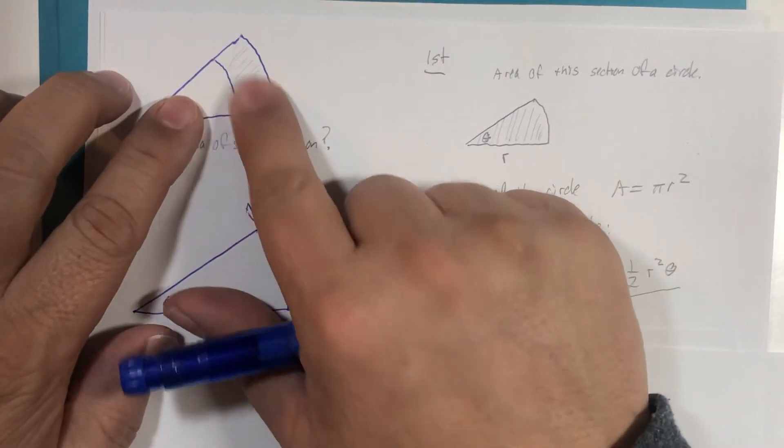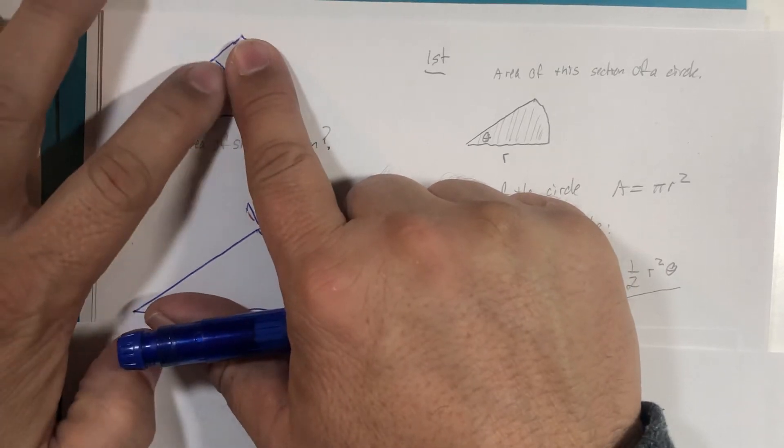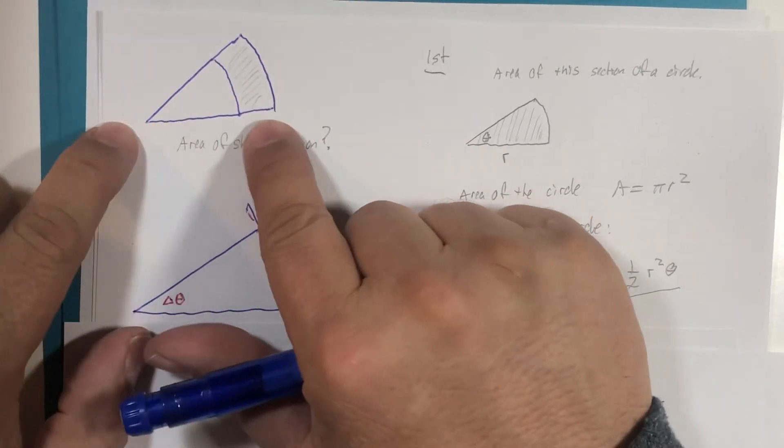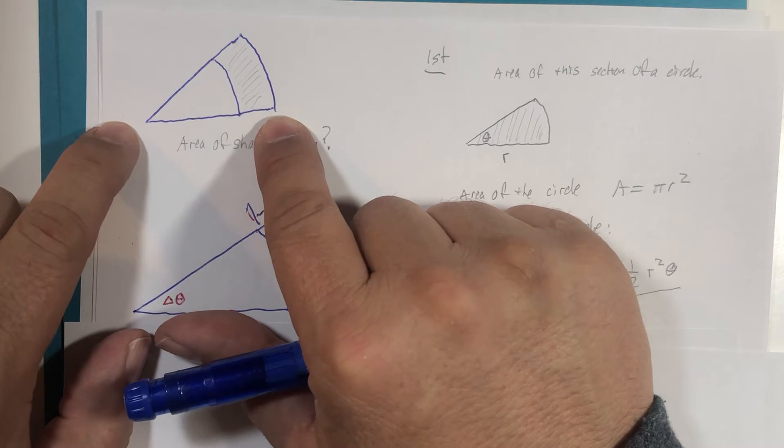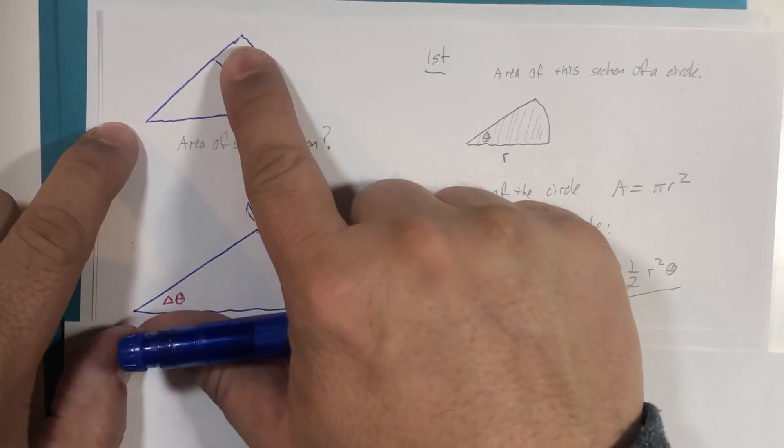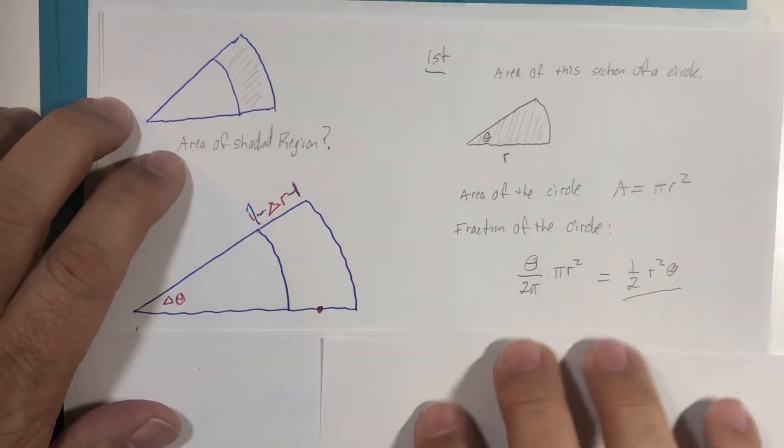By finding the area of this and the area of the entire slice, and then subtracting them, we get our shaded region. So here's what we need.